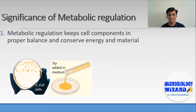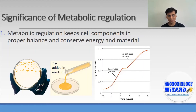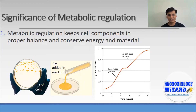This happens because tryptophan is already provided in the medium, so the cell signals the metabolic pathway to stop synthesizing it. Similarly, if given a choice between lactose and glucose, an organism will first choose glucose because it is more easily degradable — as seen in the diauxic growth curve. Once glucose is completely utilized, the organism then opts for lactose, a slightly more complex disaccharide.